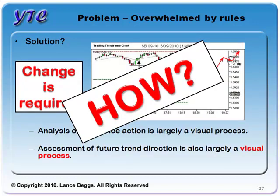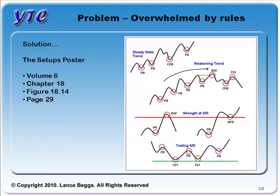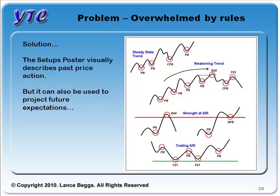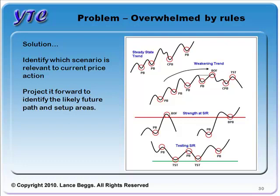How do we make this change? We're going to make use of the Setups poster in Chapter 18 in Volume 6 — you'll find it on page 29, so pause the video and print out a copy from your book. This will form the basis of our simplification. The Setups poster visually describes past price action, but it can also be used to project future expectations. What you need to do is identify which scenario — Steady State Trend, Weakening Trend, Strength at SR, or Testing SR — is relevant to current price action and project it forward.